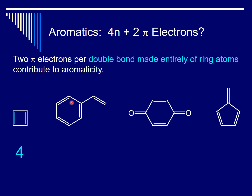For the next example, there are actually 4 double bonds; however, the one on the right is completely outside of the ring and is actually an alkene. We don't count that double bond outside the ring, because aromaticity is a property of ring systems, not their substituents or the atoms or groups attached to a particular ring. So, 3 double bonds: 2 times 3 is 6 pi electrons.